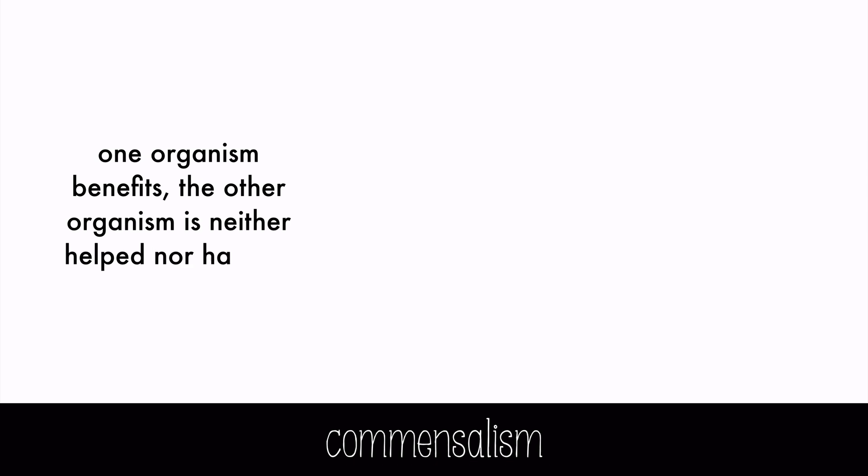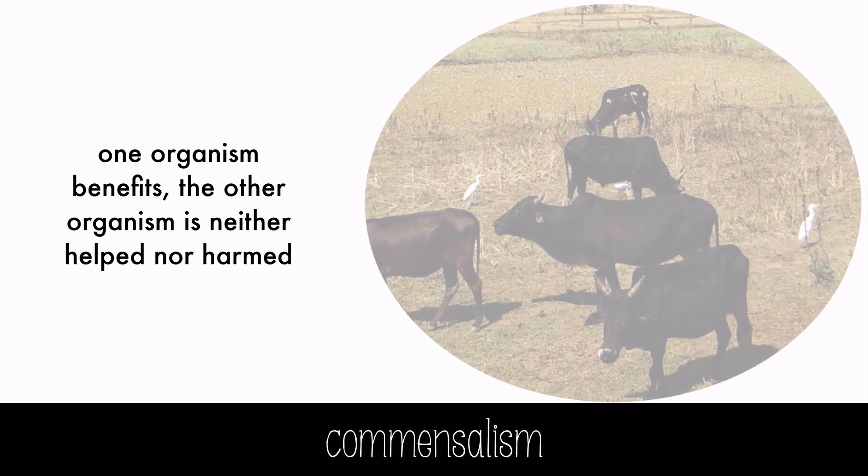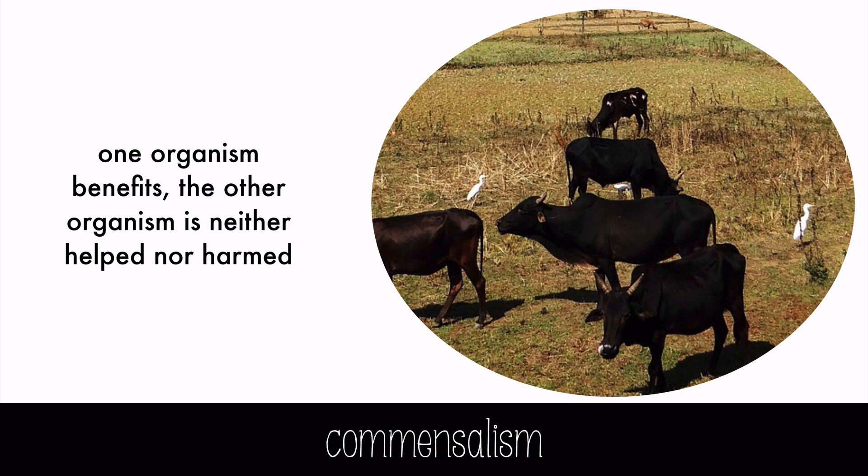In commensalism, one organism benefits, but the other organism is neither helped nor harmed. Cattle egrets and cape buffaloes are a great example. The birds feed on small animals such as insects and lizards that are forced out of their hiding places by the movement of the buffaloes through the grass. It's a great way to get food for the egrets, and it makes no difference to the buffaloes.